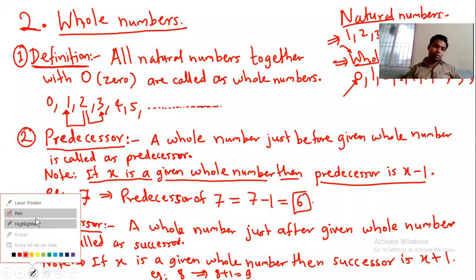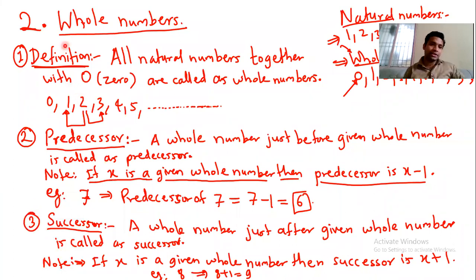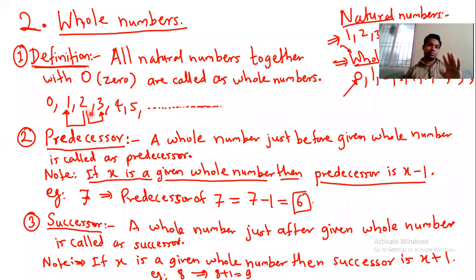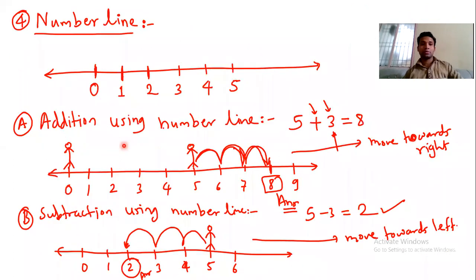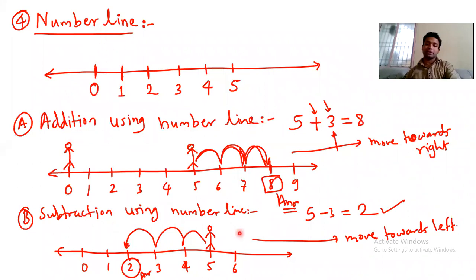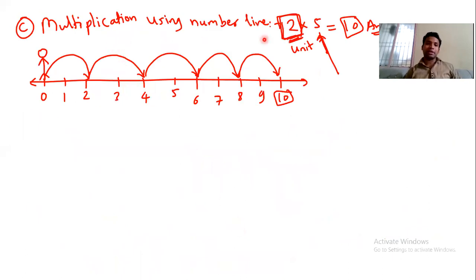So, we have noted all these points. The first was the definition: whole number means all natural numbers together with zero. Predecessor and successor — the predecessor means the first whole number immediately to the left, and the successor is the immediate right. Then we discussed how to use the number line for adding, subtracting, and multiplying numbers. We discussed this yesterday.